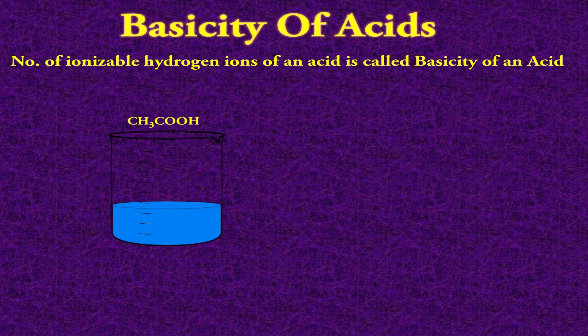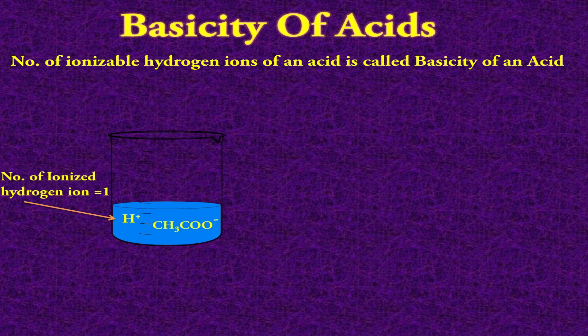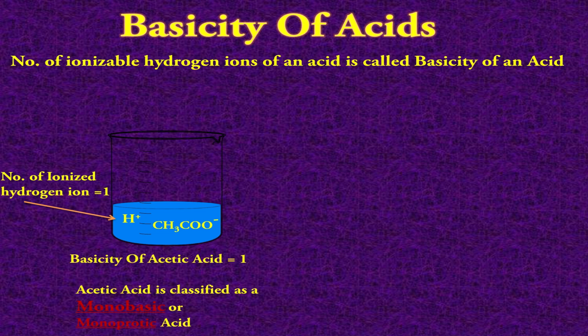Let's take the example of acetic acid, formula CH₃COOH. When this goes in water, it breaks down into only one hydrogen ion and an acetate ion, CH₃COO⁻. As I explained in my previous video, although acetic acid has 4 hydrogen atoms, only one hydrogen is removable or ionizable. So the basicity of acetic acid is 1, and it is classified as a monobasic acid or monoprotic acid.